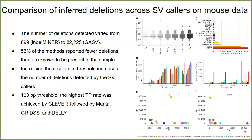We vary our resolution threshold from 10 base pairs to 10,000 base pairs, and we observe that when we increase our resolution threshold, the number of deletions detected by the SV callers increases, which means that the true positive rate and the true negative rate increase. At a 100 base pair threshold, the tool with the highest true positive rate is CLEVER.